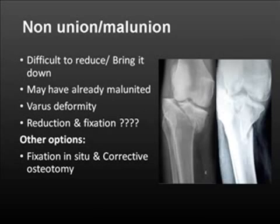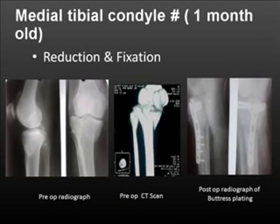Non-union or malunion of these fractures is fairly common, specifically if they were not managed operatively initially and subluxation occurs later. Whether in non-union or malunion, it is very difficult to bring the fragment down — if it is malunited, reduction becomes very difficult. Options include reduction if possible, or fixing it in situ and performing a corrective osteotomy for the varus deformity. In one case that was about a month old, there was some callus but we were able to mobilize the fragment, reduce it, and stabilize it with a medial plate using an open reduction method.